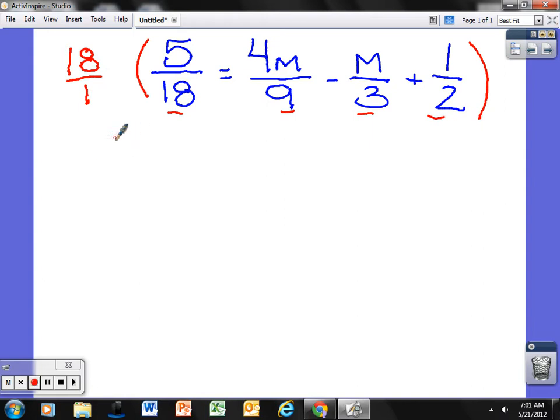So really this problem becomes 18 over 1 times 5/18 which is equal to 4m over 9 times 18 over 1 minus 18 over 1 times m over 3 plus 18 over 1 times 1 half.